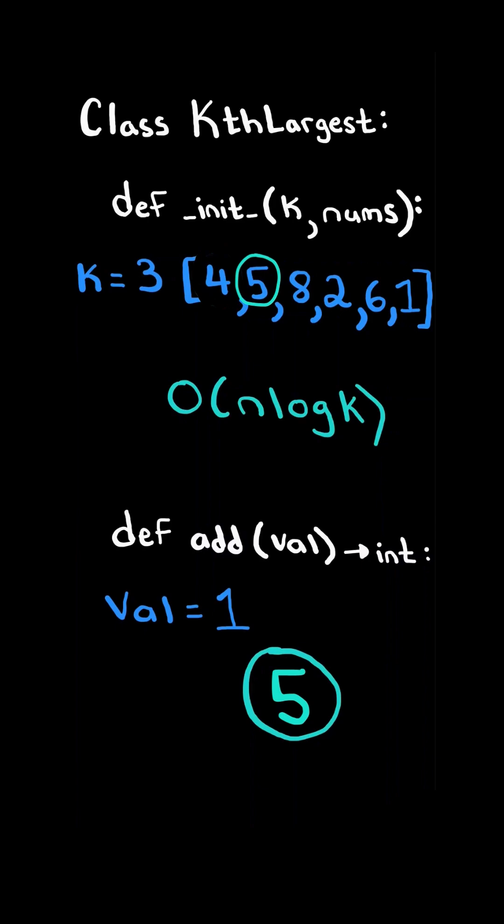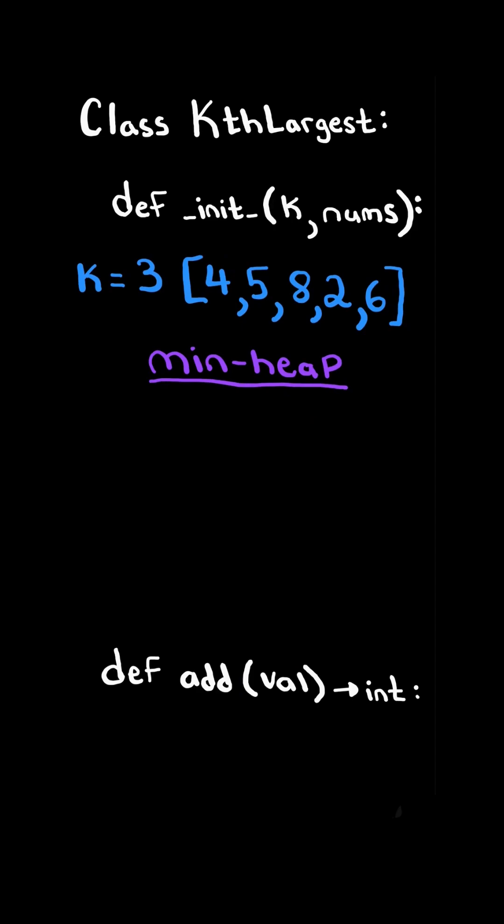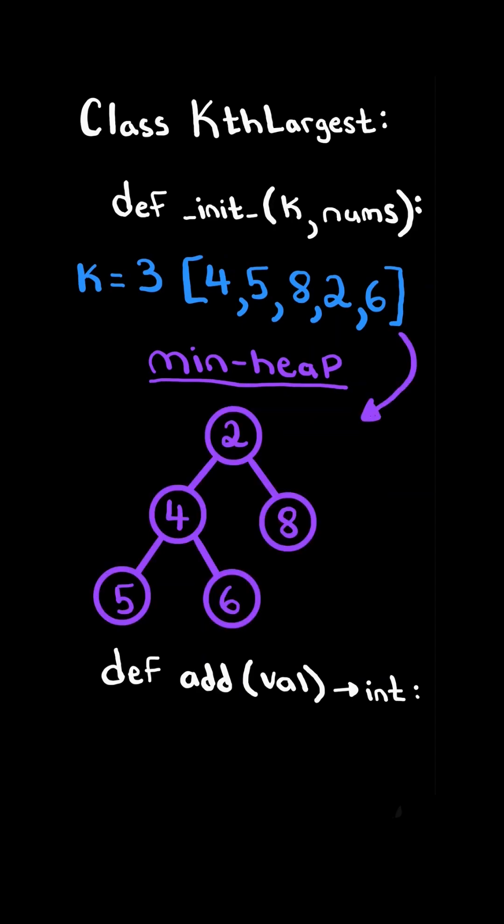We will implement the constructor in O(n log k) time and implement the add method in O(log k) time. The way we are going to keep track of the kth largest is using a min-heap. We convert the list into a min-heap. In a min-heap, every node's children must be larger than its value, and the minimum value is always at the root node.